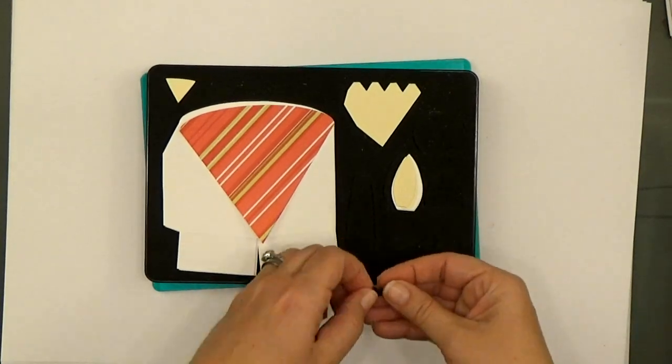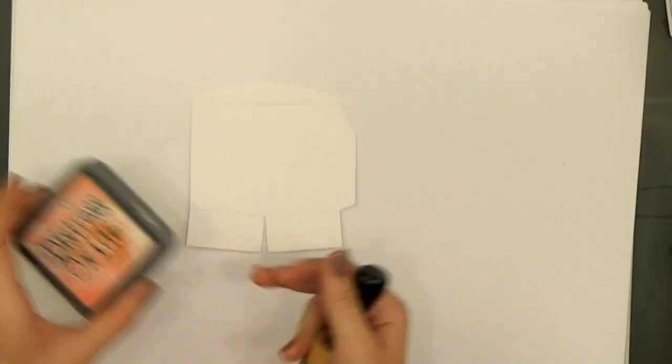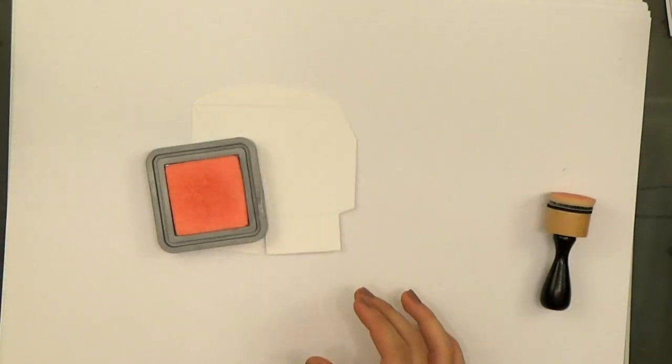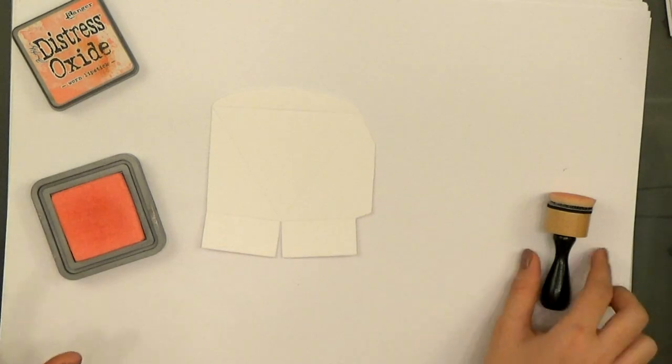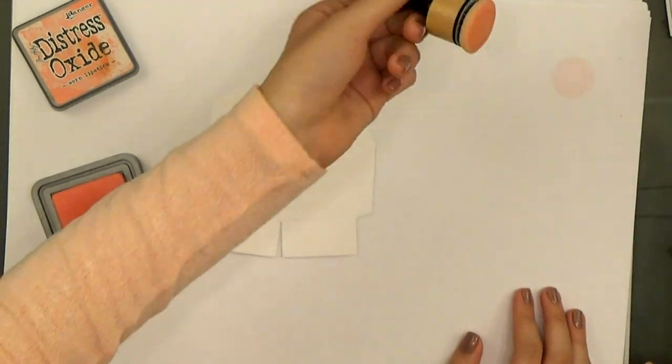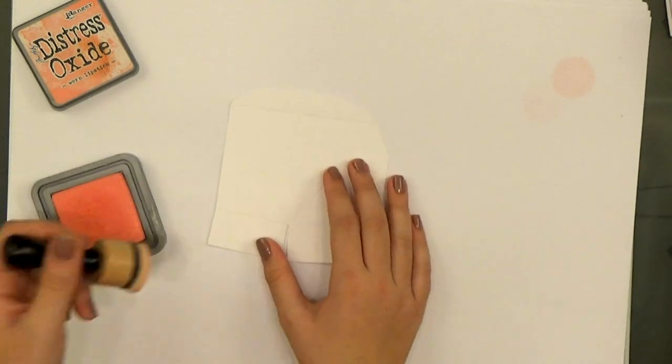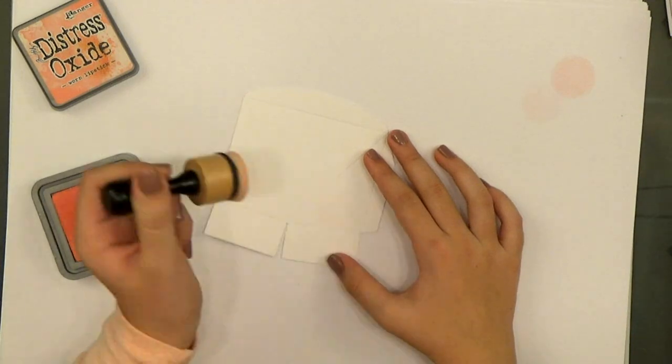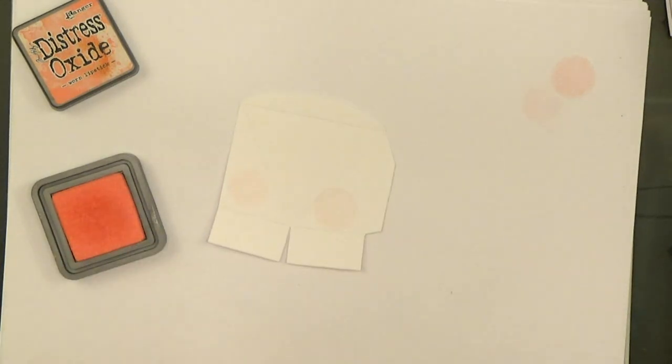While your box is still flat and unassembled, you can add details like shading and highlights. In this case, Kelly's going to add some rosy cheeks with worn lipstick distressing. She's using a really light touch here to give them some soft color.